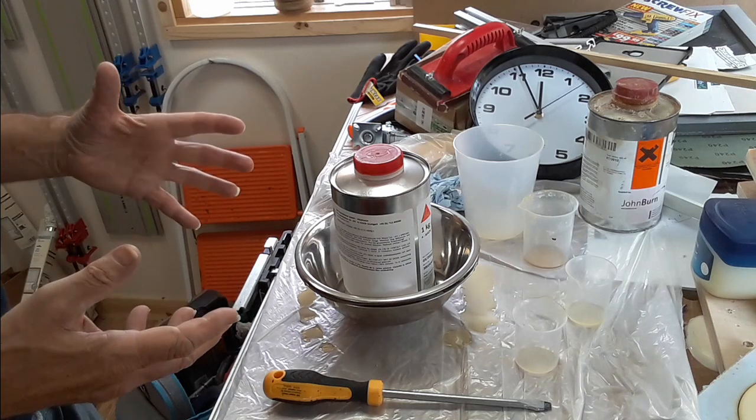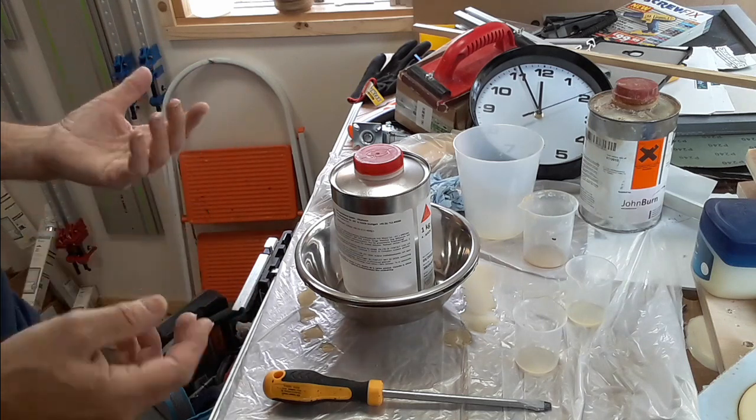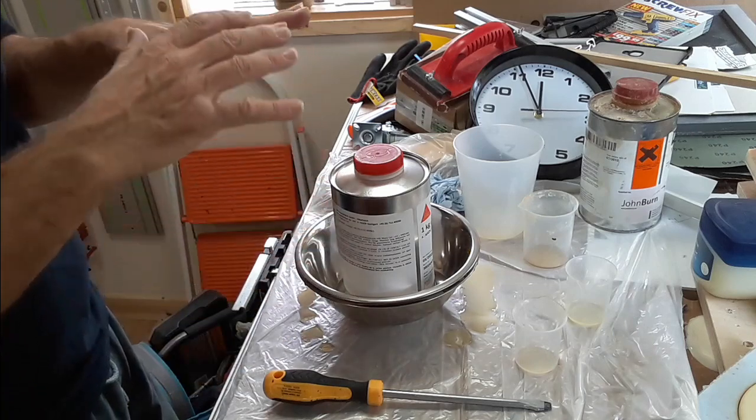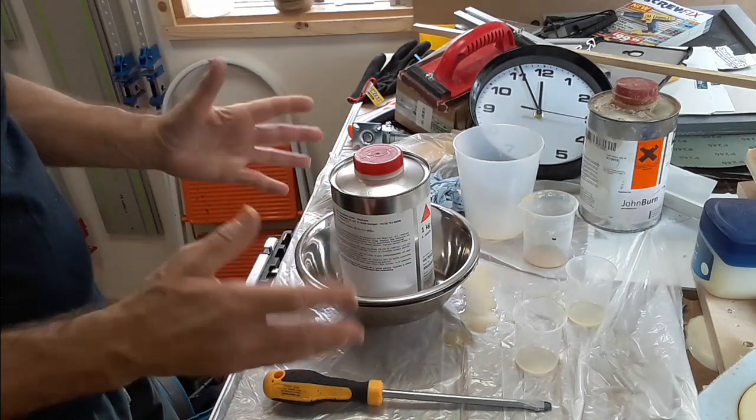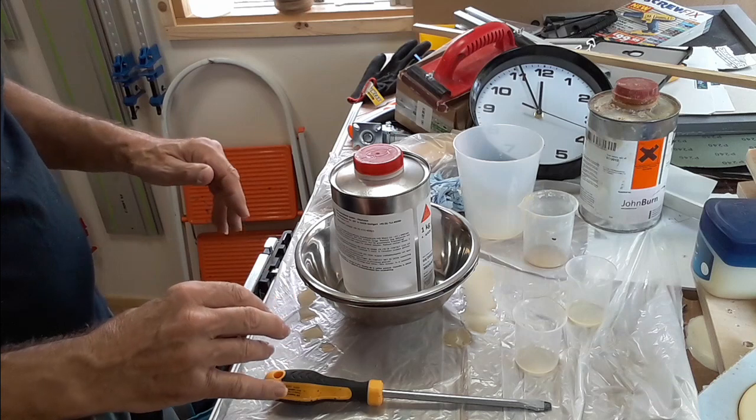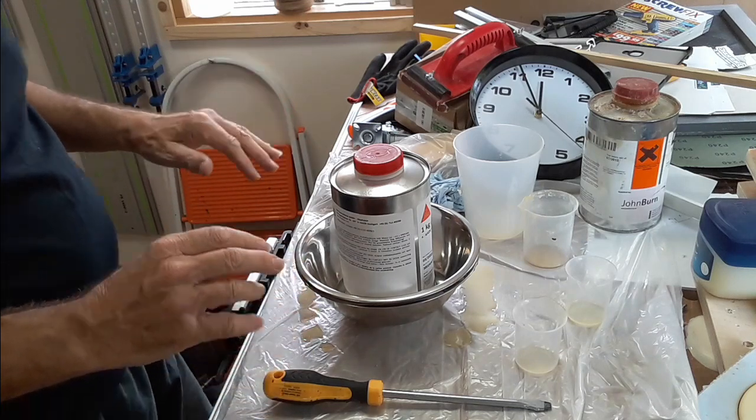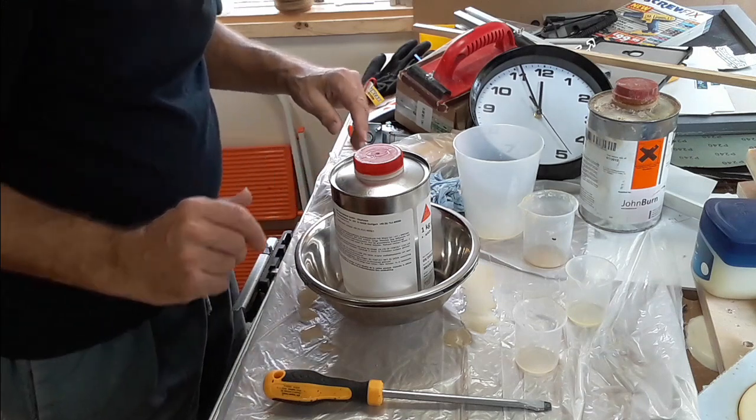While it's still warm the resin tends to be a little bit flexible. That can be an advantage if you want to make something curved. You can cast a flat sheet and then just take it out the mold fast. But in this instance I want to make sure it's really set quite well before I do anything else.